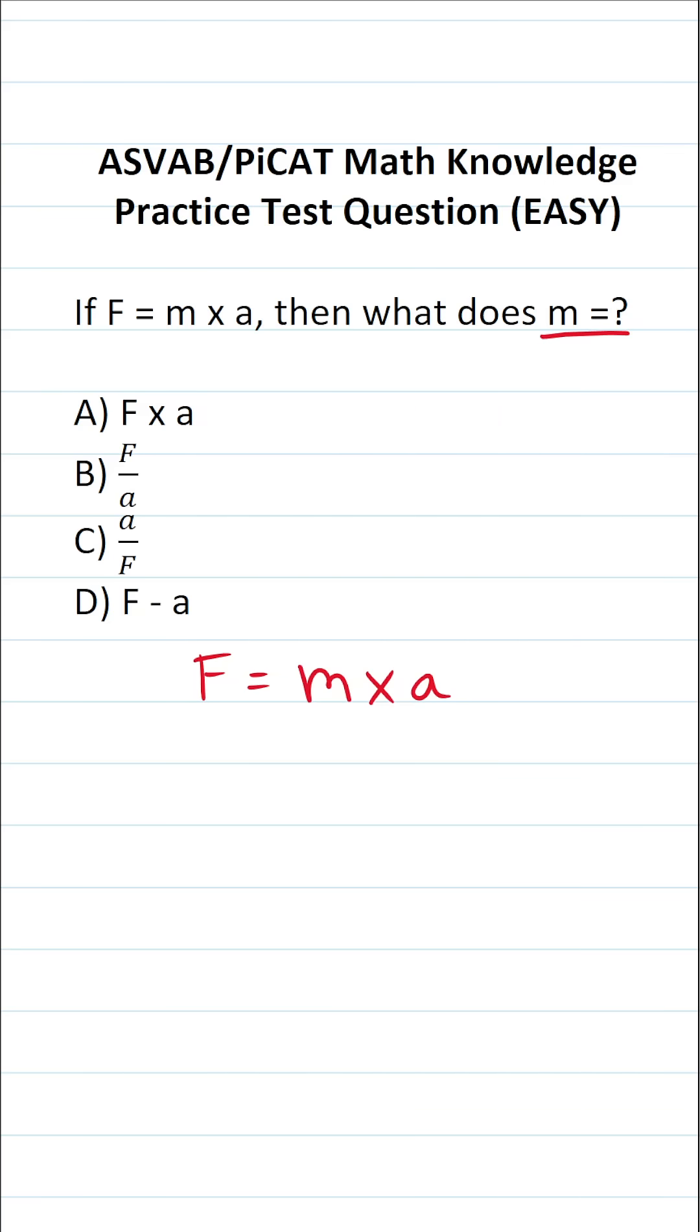This says M times A, so we're going to perform the opposite operation to both sides of the equation. That is to say, we're going to divide both sides of the equation by A. In doing so, this crosses out over here, leaving you with M on this side.